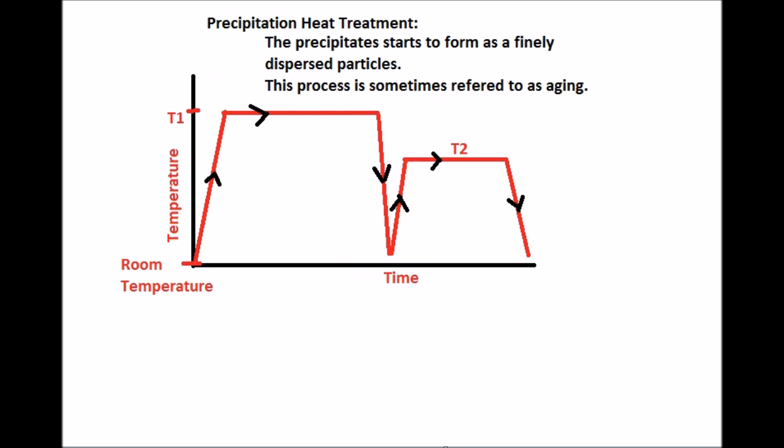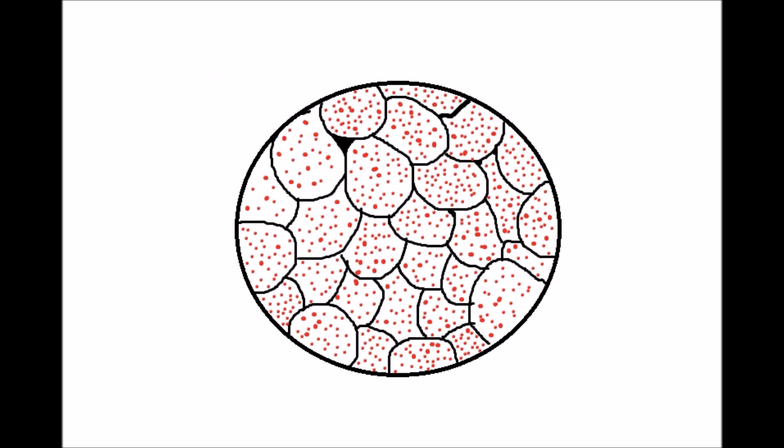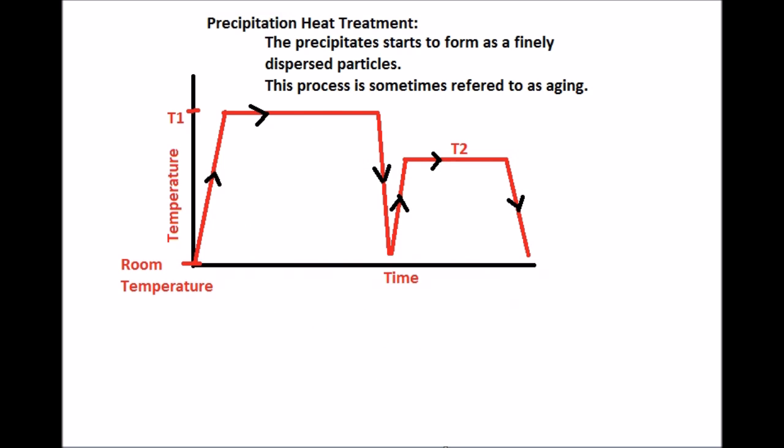The third and final step is precipitation heat treatment. The precipitates start to form as finely dispersed particles throughout the grains in a secondary phase, which are represented as the red dots within this grain structure. Sometimes this step is referred to as aging. The temperature for step three is less than step one, so that the correct precipitates form inside the initial grains without overtaking it.